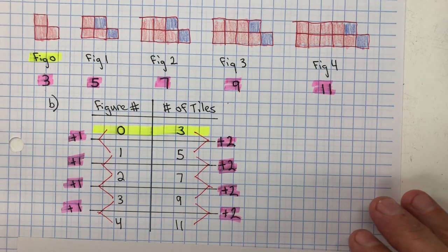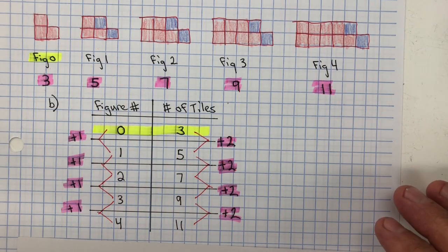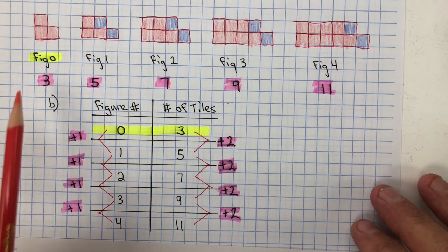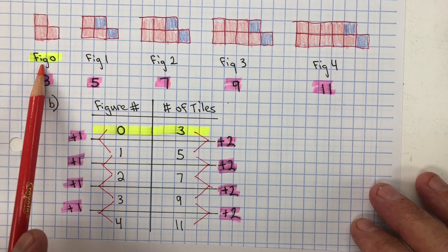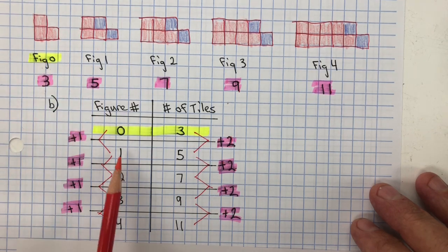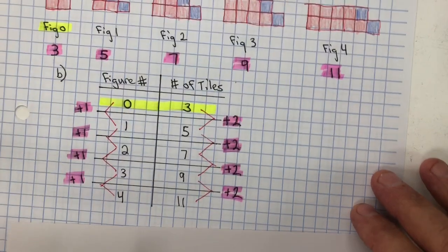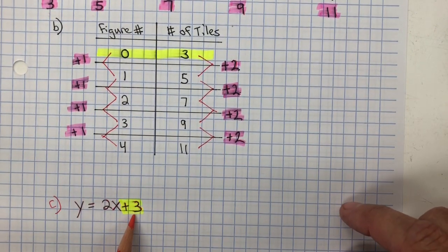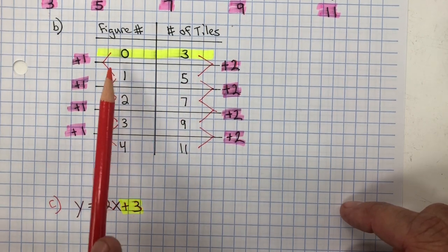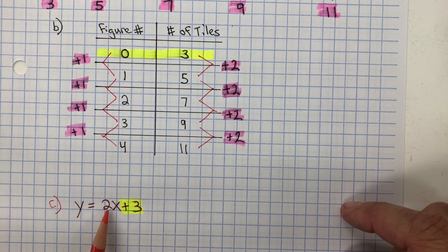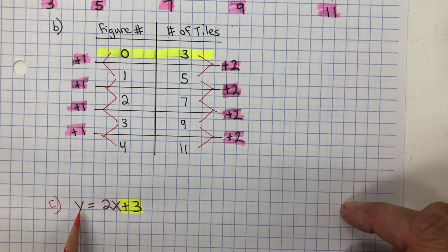In part C, I needed to represent this pattern using an algebraic equation or rule. And I see that for figure 0, I started with 3 tiles. And you can see that represented here, and you can see it represented in the table. So for my equation, this is my starting value, my initial value. And for every one figure number, it's increasing by 2 tiles. So my equation is y equals 2x plus 3.